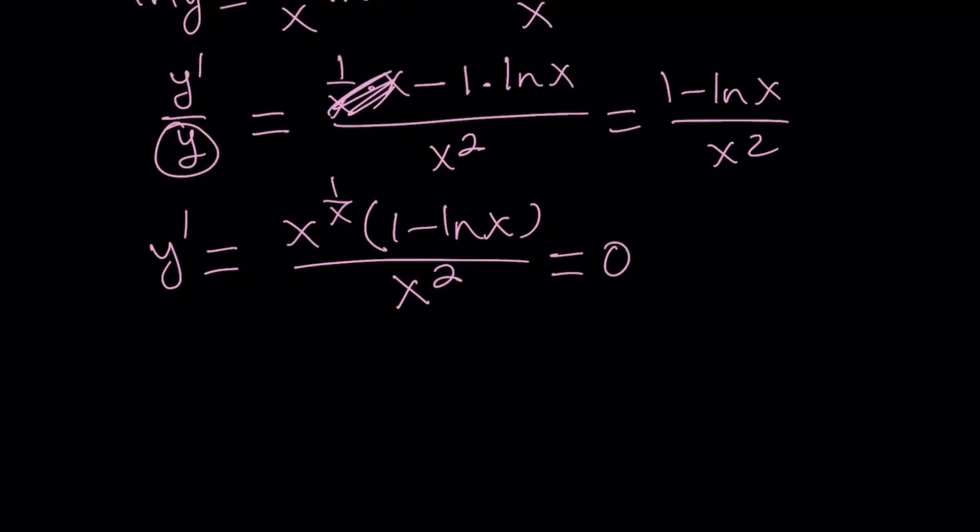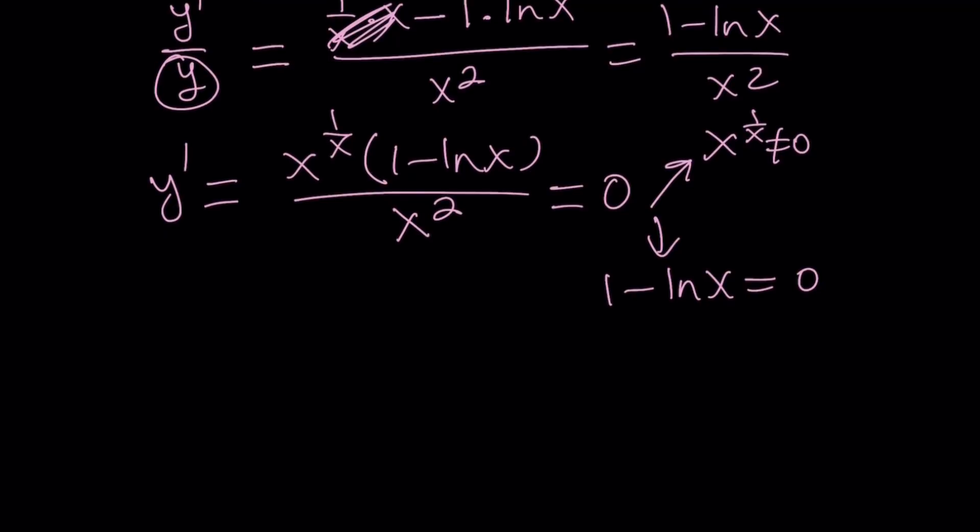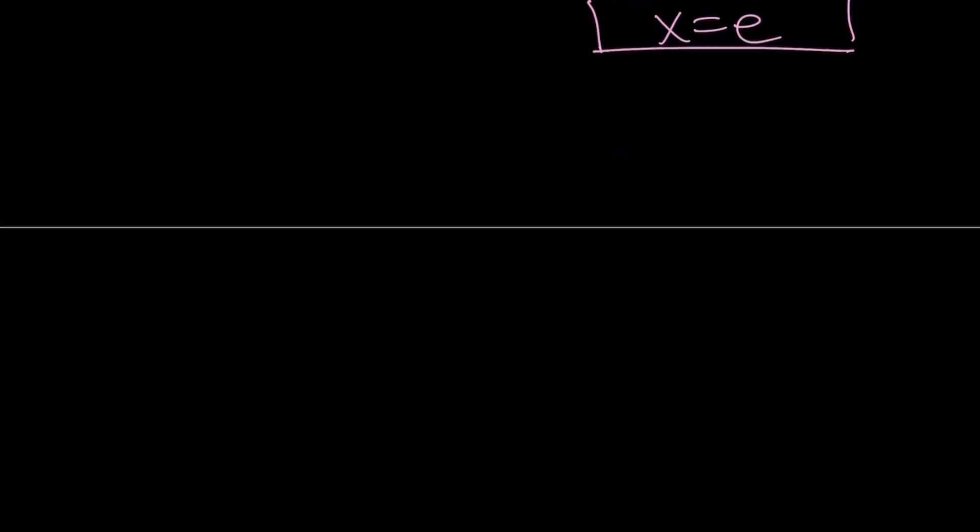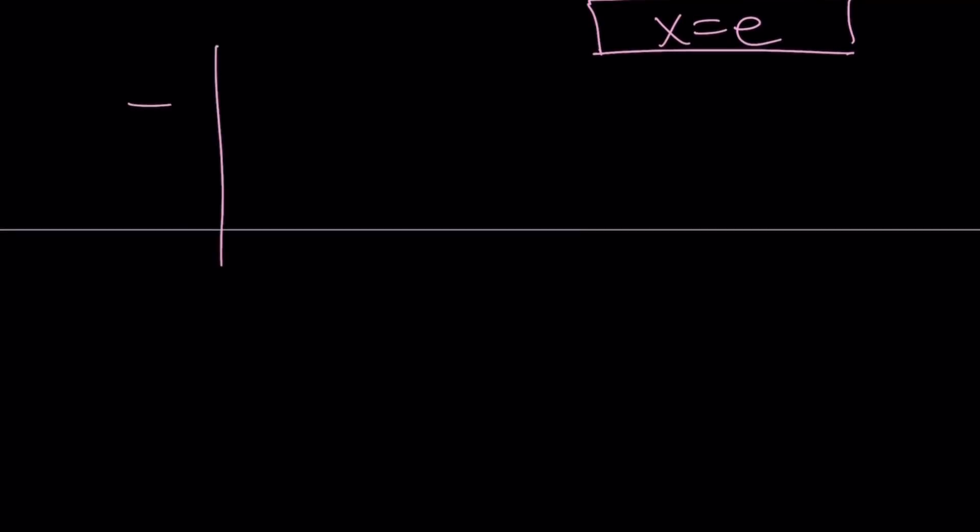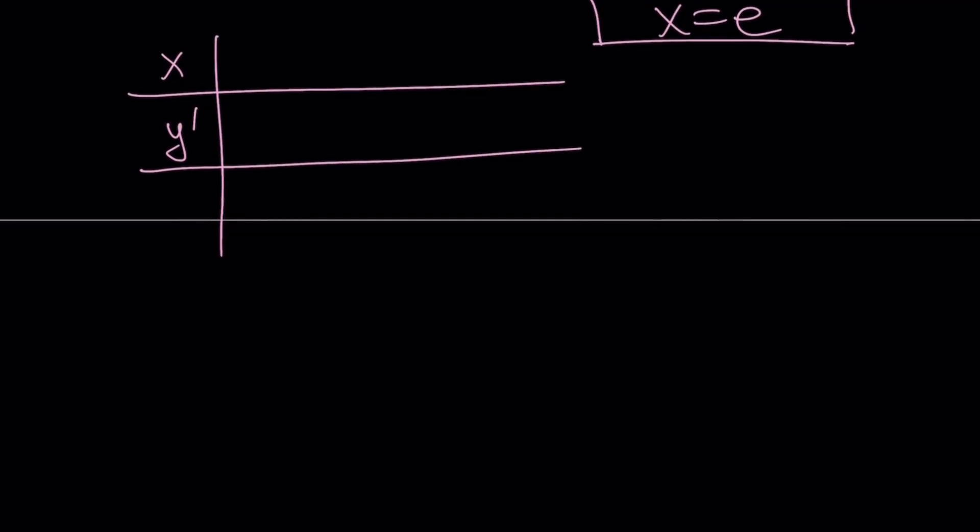Obviously, x to the power of 1 over x cannot equal 0, right? There's no way. So we have to set 1 minus ln x equal to 0. Obviously, you don't want x to be 0, but that's not an issue, because x is positive. From here, you get ln x equals 1, and x equals e. That is going to be our x-coordinate of our critical point. Let's go ahead and make a table. And my table, I know some folks don't like the table, they want me to use the second derivative test, but who would like to take the second derivative of this beast? I don't want to.